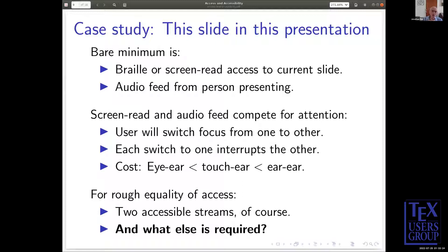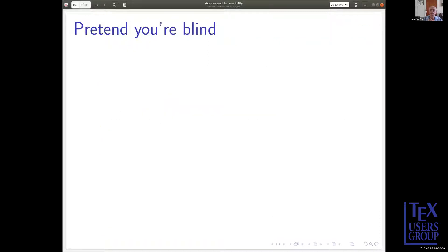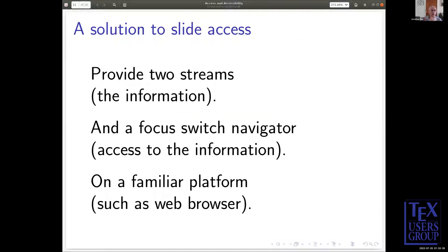You also have to be more aware of the cognitive burden. Blind people generally have to manage with higher levels of cognitive burden. So here's one solution: you provide two streams which are the information, and what I call a 'focus switch navigator', which gives you access to the information. It has to be on a familiar platform — probably a web browser or something like Visual Studio Code — and it would be most comfortable on a platform the user already uses. Different users might use different platforms.